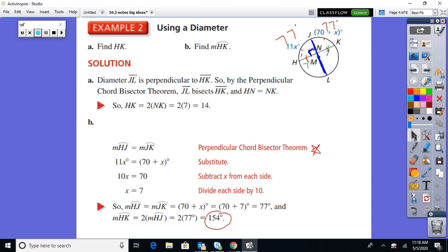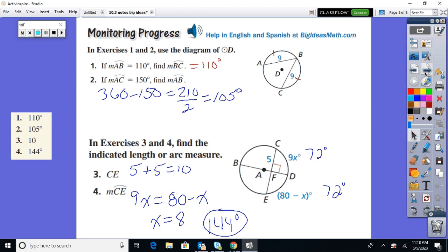Do try the monitor progress questions, if you will. Pause the video. So here we go. Monitor progress 1, 2, 3, and 4. Number 1, pretty easy. If arc AB is 110, then arc BC is 110 if they're telling you that the chords are the same.